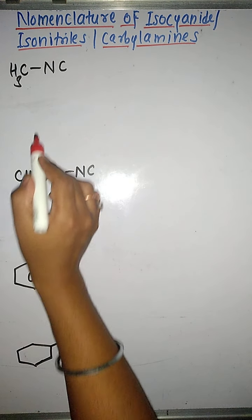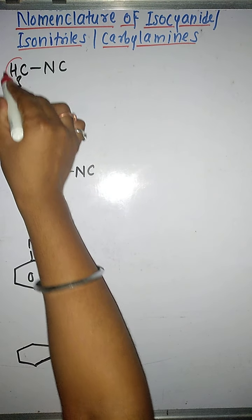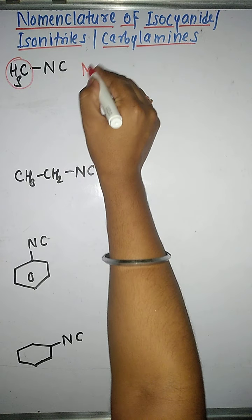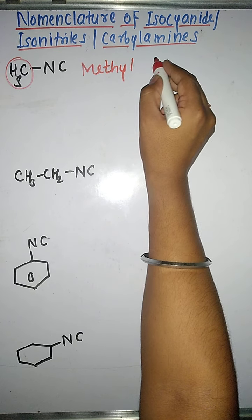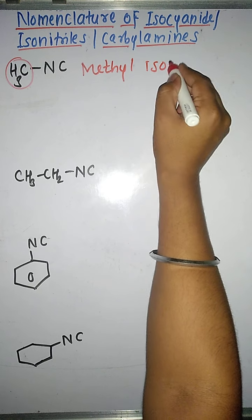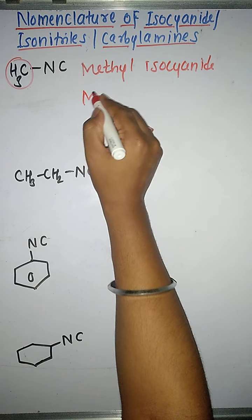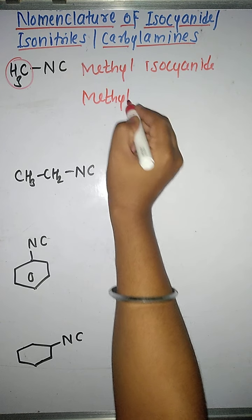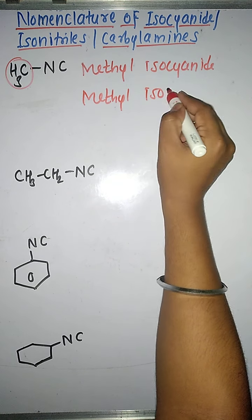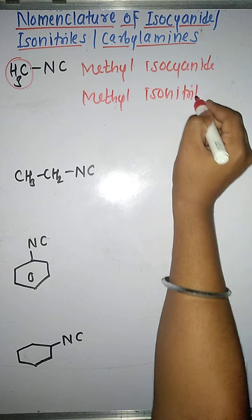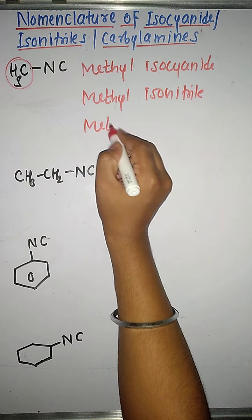Now first you have to identify the alkyl group attached to the functional group. Which alkyl group is it? Methyl. So write the word methyl first, and you are going to write the word isocyanide at the end. So it is methyl isocyanide, or you may write its name as methyl isonitrile, or methyl carbilamine.